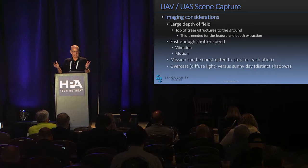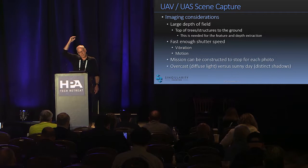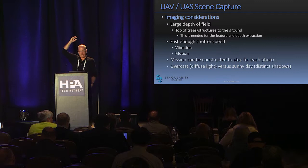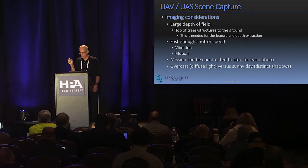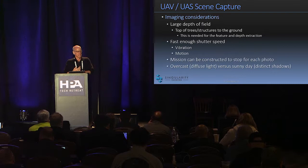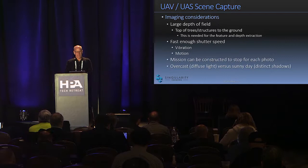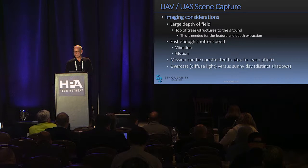There are other considerations. You want a large depth of field, because if you're flying over the ground and you have a rooftop or treetops, you need everything in focus — this is how depth information is extracted from the compared images. You also have competing parameters: you need a fast enough shutter speed because you're on a platform that may have vibration or motion. You can construct a mission to stop at every waypoint, but even then it has to stop and stabilize, which doubles mission time and battery consumption. It's also very good to have overcast light; otherwise your shadows get baked into the model.